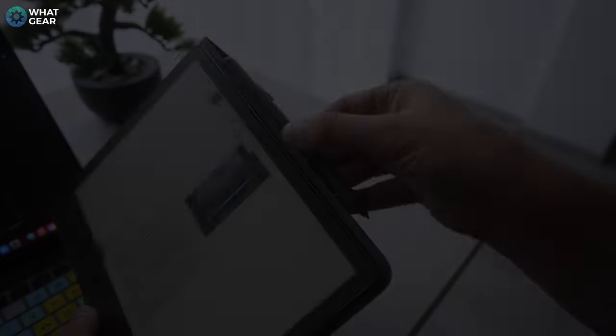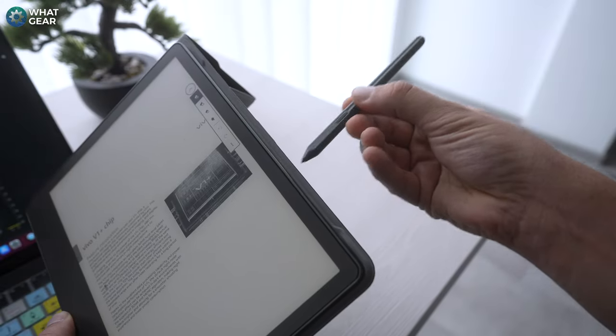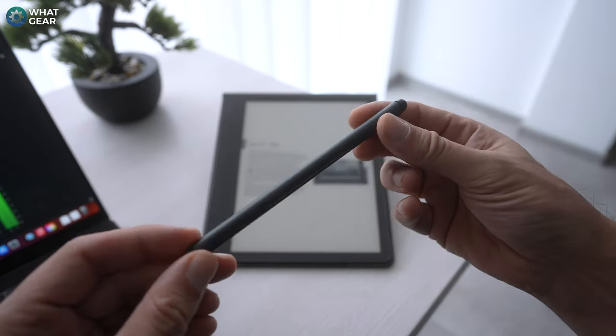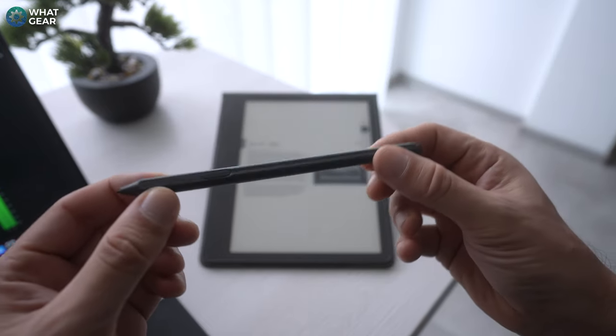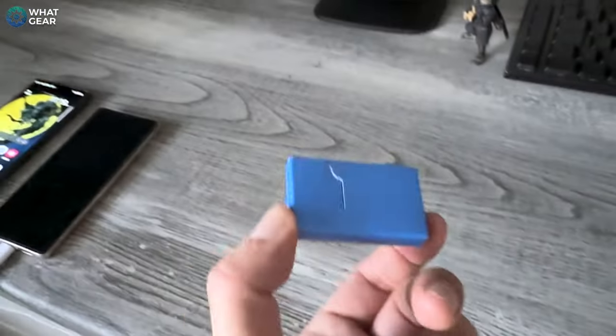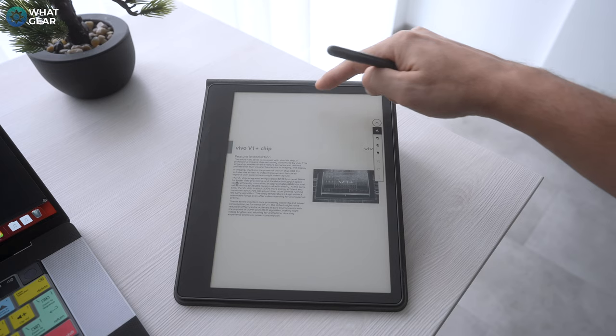Okay something that's currently unique to the Kindle scribe is of course the pen functionality. It's actually a Wacom stylus so this means you can use other Wacom styluses on the Kindle scribe. And if you're wondering if the scribe comes with replacement tips it does. There is a little pack of five in the box.